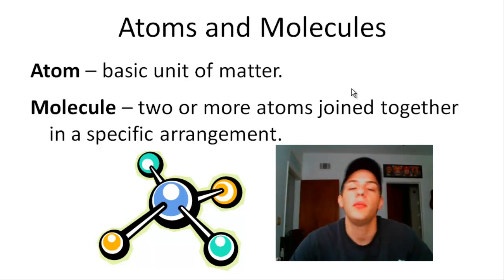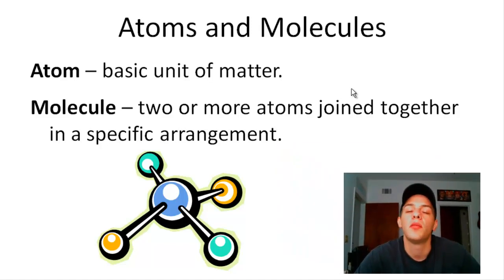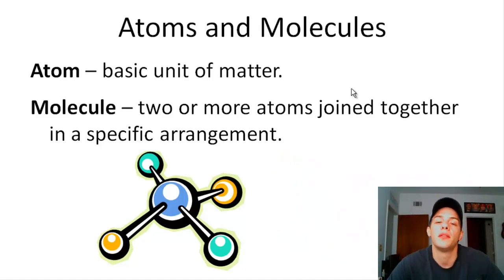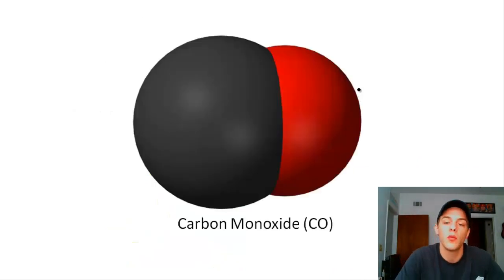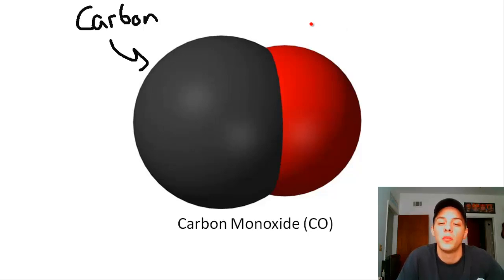So that theme that I mentioned earlier, the fact that the behavior of matter is dependent upon the properties of its constituent atoms and molecules, I'd like to demonstrate that a little bit further by talking about carbon monoxide. Carbon monoxide is a fairly simple molecule. It is composed of a carbon atom, which is shown here in black, and that carbon atom is bonded to an oxygen atom, which is shown here in red.